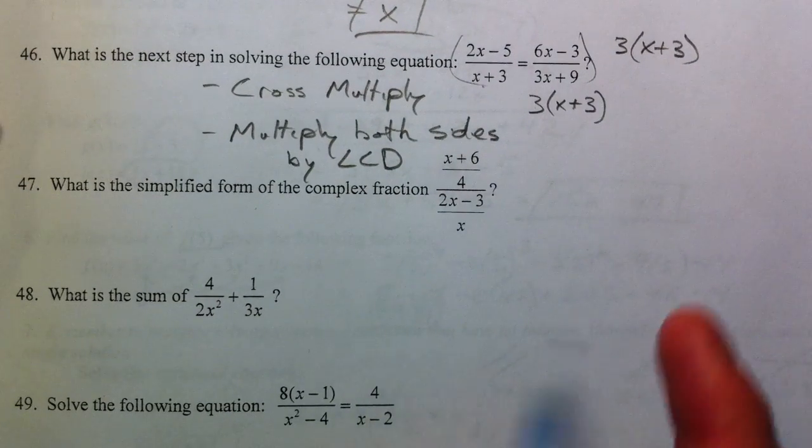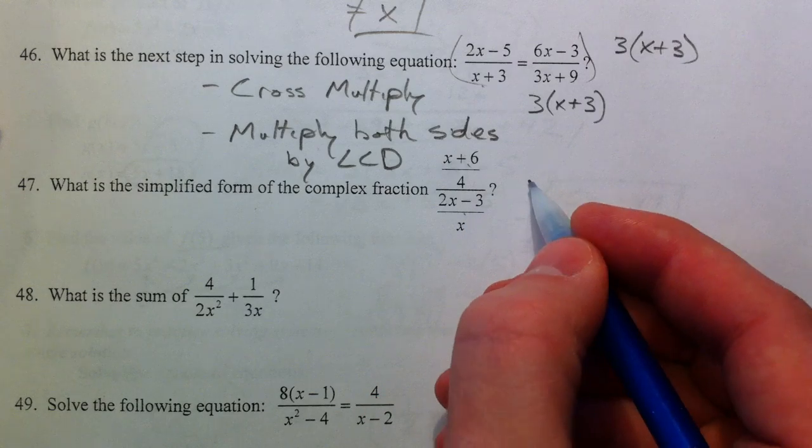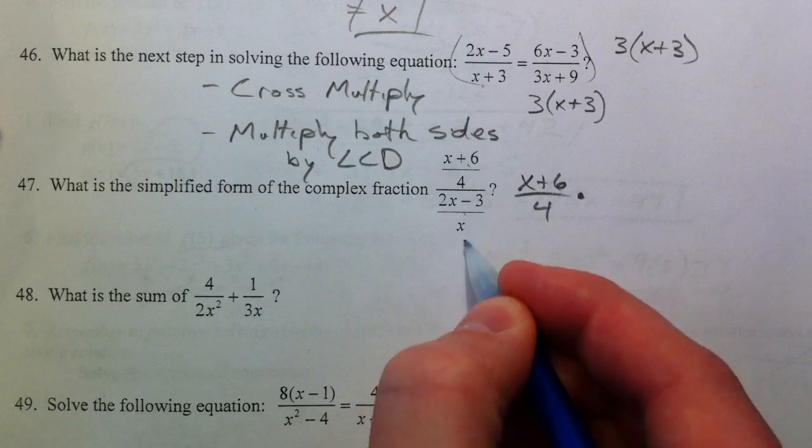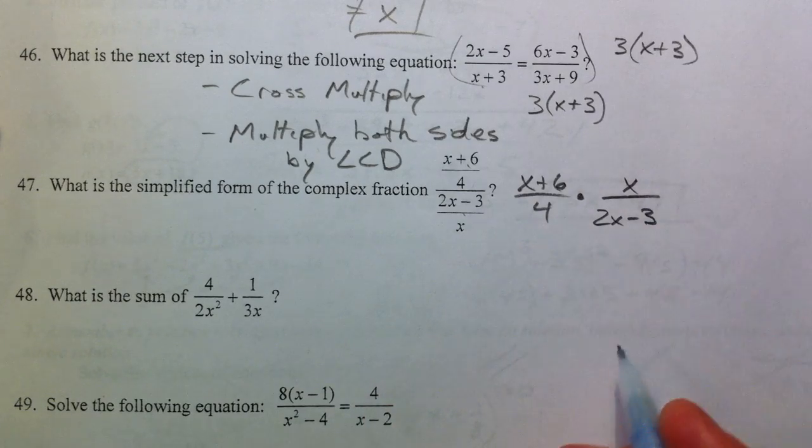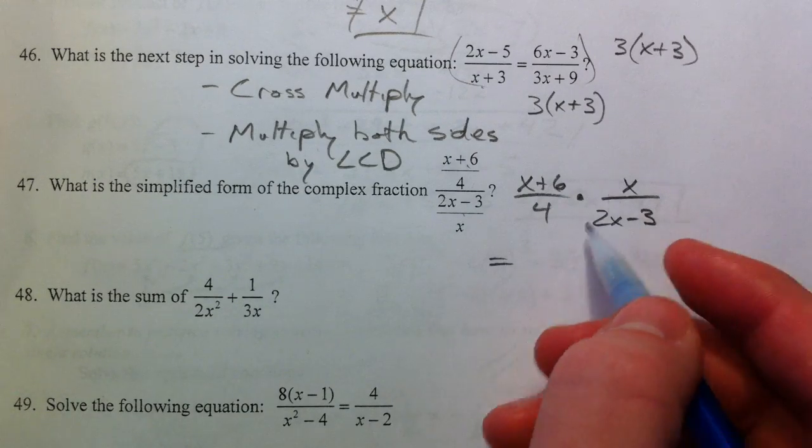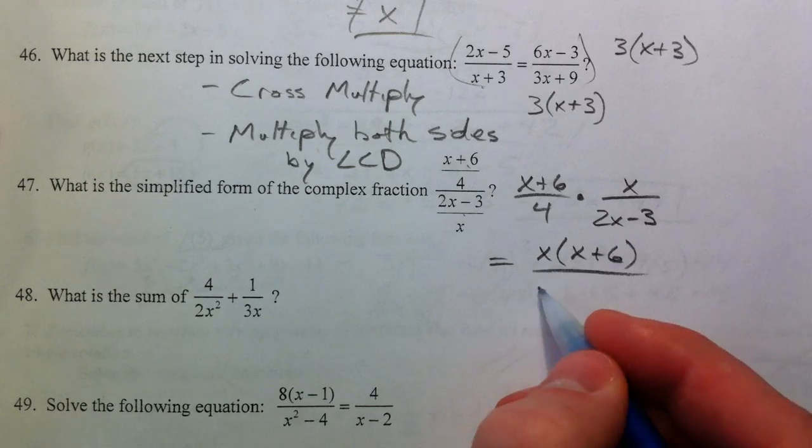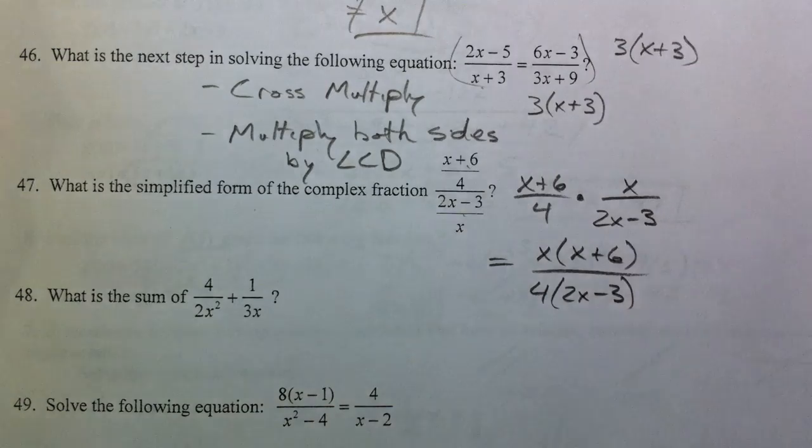All right, 47. This right here is just a fraction divided by a fraction. And so that's X plus 6 over 4 times the reciprocal X over 2X minus 3. Neither one of those can be factored. And so we just write it all together and we just leave it like that.